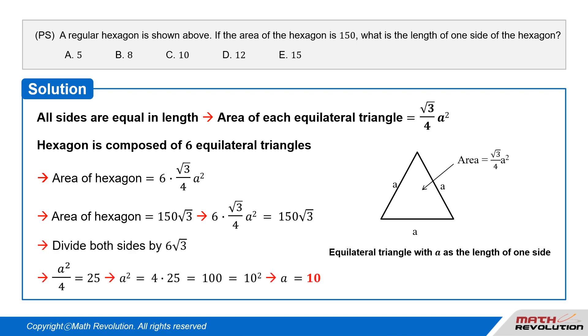Dividing both sides by 6√3, we obtain A²/4 = 25. So A² = 4 × 25 = 100 = 10². Therefore, A = 10.